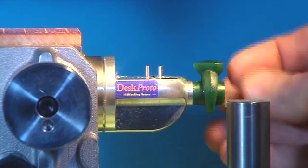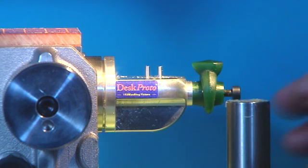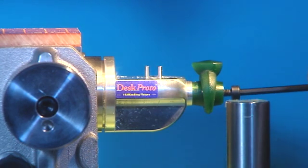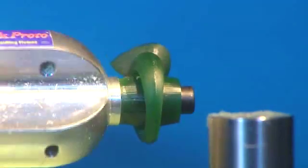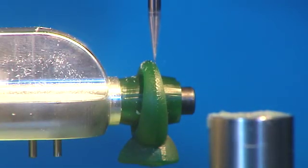Step 3: Finally, clamp the wax model onto the vertical clamping surface and start the rotation axis toolpath. A very simple process with highly accurate results.